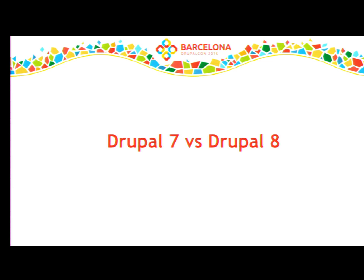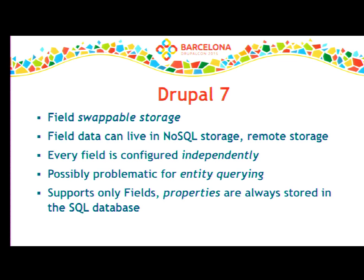In Drupal 7 we used to have what's called swappable storage just for fields, which means you could assign a dedicated storage backend to each field attached to any entity type. This meant every field could live in a separate storage backend, such as NoSQL storage or a remote storage. This had some drawbacks, because configuring different backends for different fields attached to the same entity type means you may run into trouble when you need to query across those two fields — querying across different storage backends is not exactly viable.